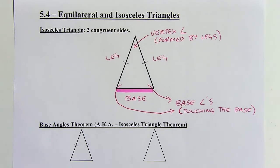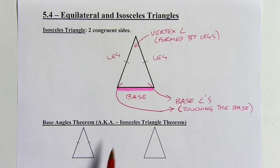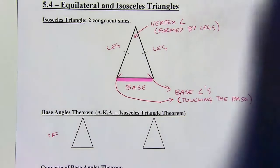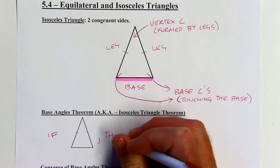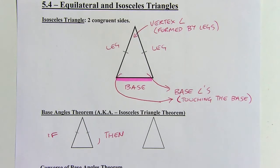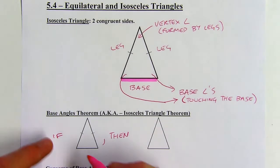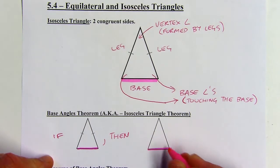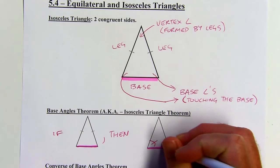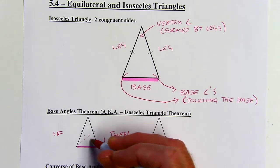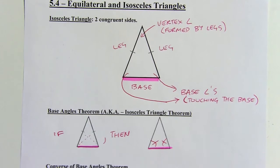That brings us to the Base Angles Theorem, also known as the Isosceles Triangle Theorem. If you have an isosceles triangle with two congruent sides, then the base angles are going to be congruent. You have to make sure you find the right angles — the base angles are across from the two congruent sides. Those are the two congruent angles.